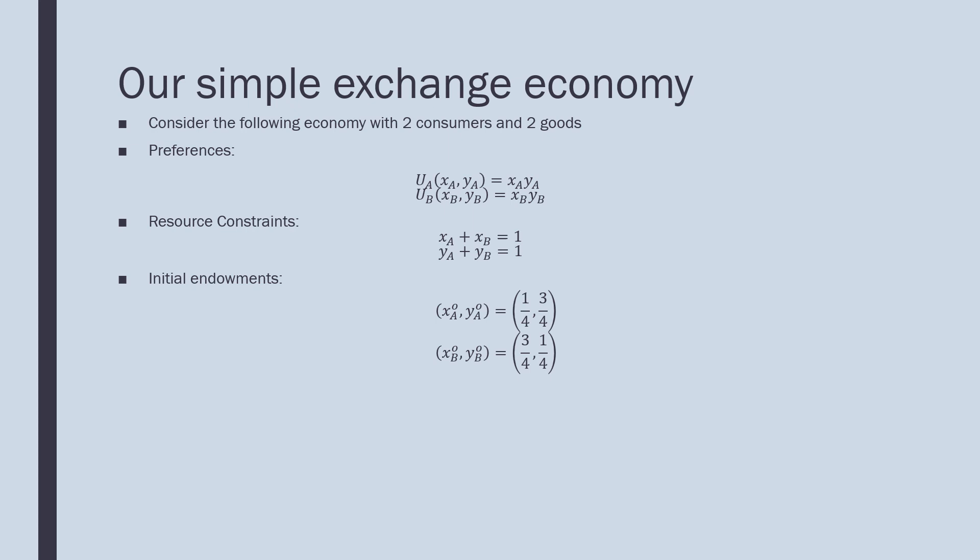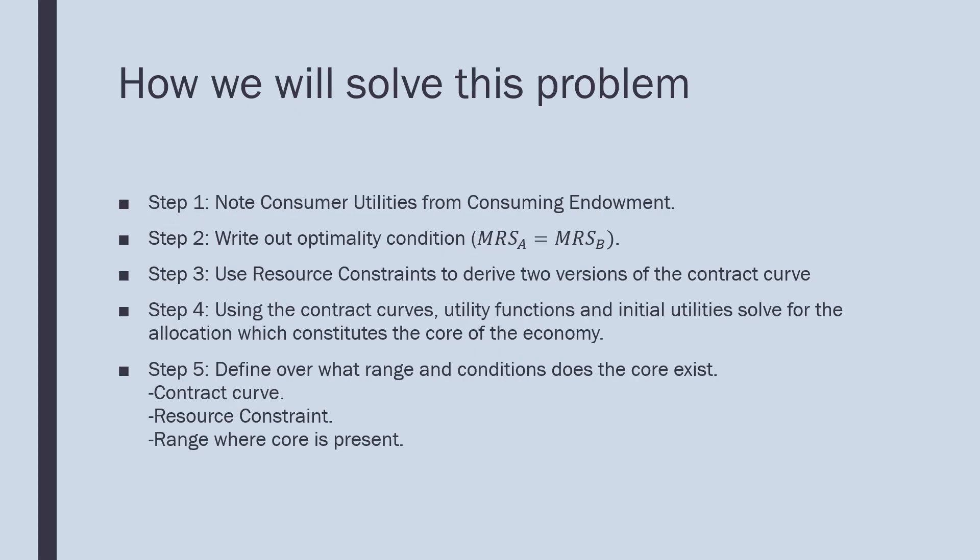The way that we're going to solve this problem is we're going to follow these steps. Step 1: note our consumers' utilities from consuming the endowment. Step 2: write out our optimality condition. Step 3: use our resource constraint to derive two versions of the contract curve in conjunction with our optimality condition.